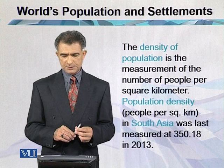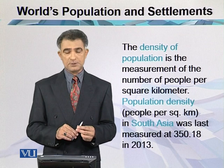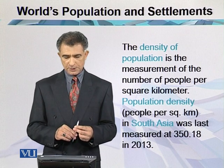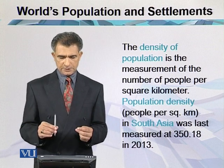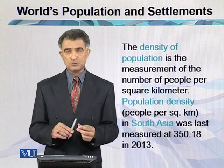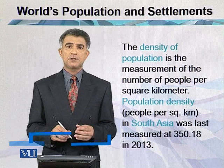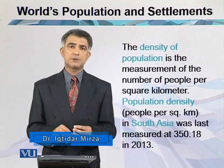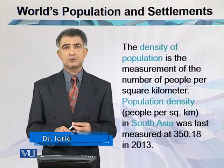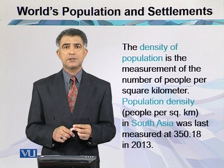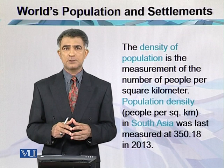What is density? It is the measurement of the number of people per square kilometer. Population density in South Asia was 350.18 persons per square kilometer in 2013 — one of the highest densities in the world. Why? Because the number of persons living per square kilometer is large, due to conditions suitable for agriculture, which is why persons are living in rural areas.